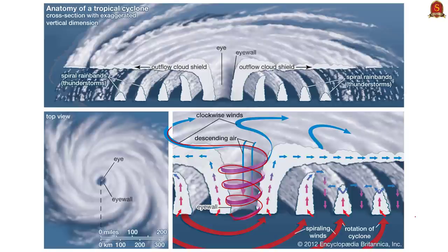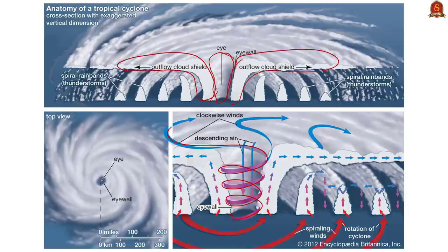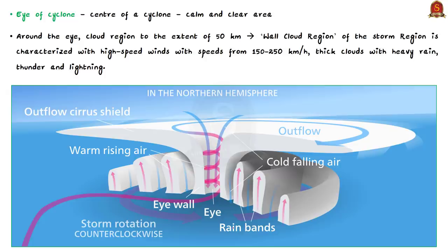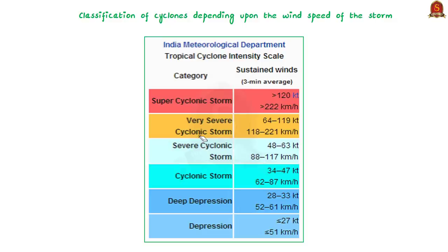The eye is a region free of clouds with light winds. Around this calm and clear eye there is a cloud region extending about 50 kilometers, called the wall cloud region of the storm. In this cloud region there are high speed winds with speeds from 150 to 250 kilometers per hour, thick clouds with heavy rain, thunder and lightning. Away from this cloud region, the wind speed gradually decreases. Even so, in severe cyclonic storms, wind speeds of 50 to 60 kilometers per hour can occur even at 60 kilometers from the storm center.